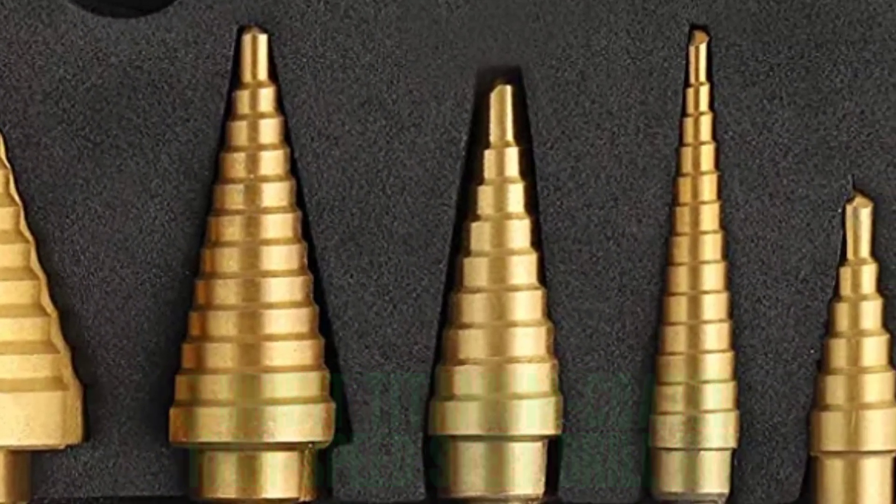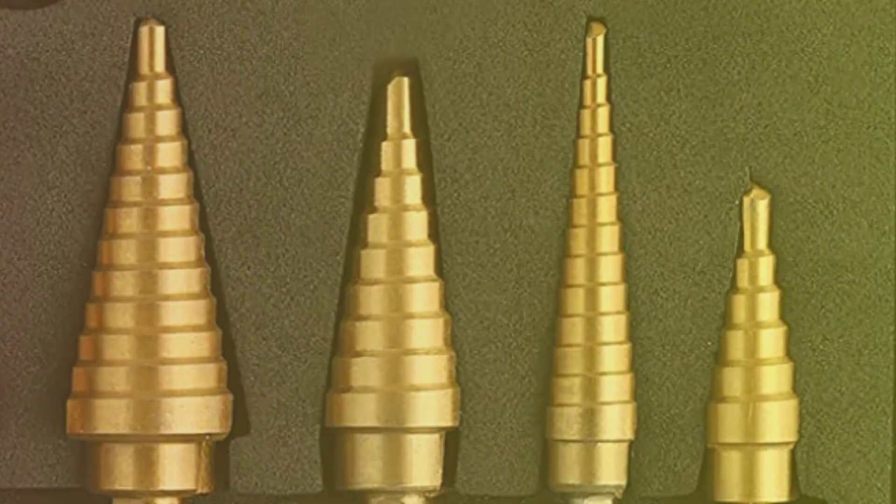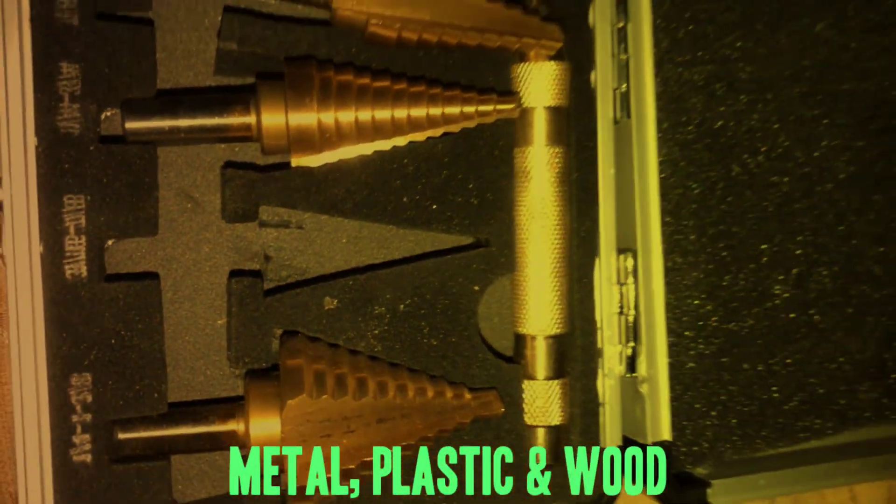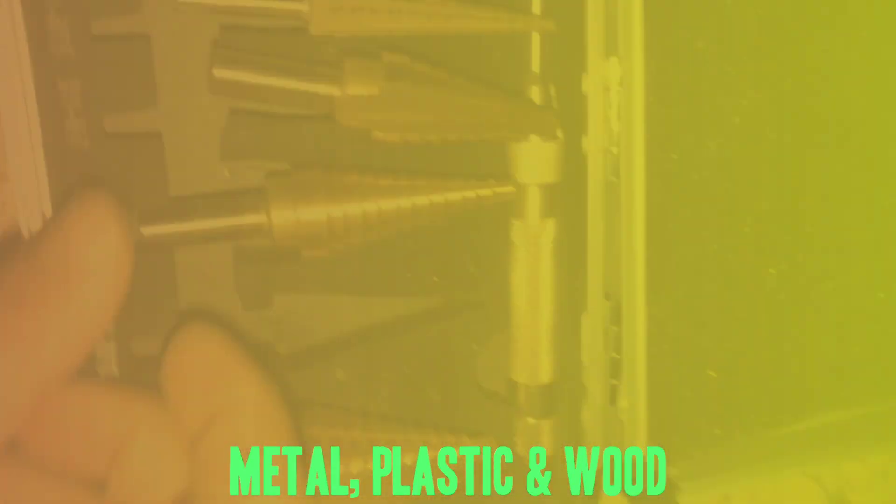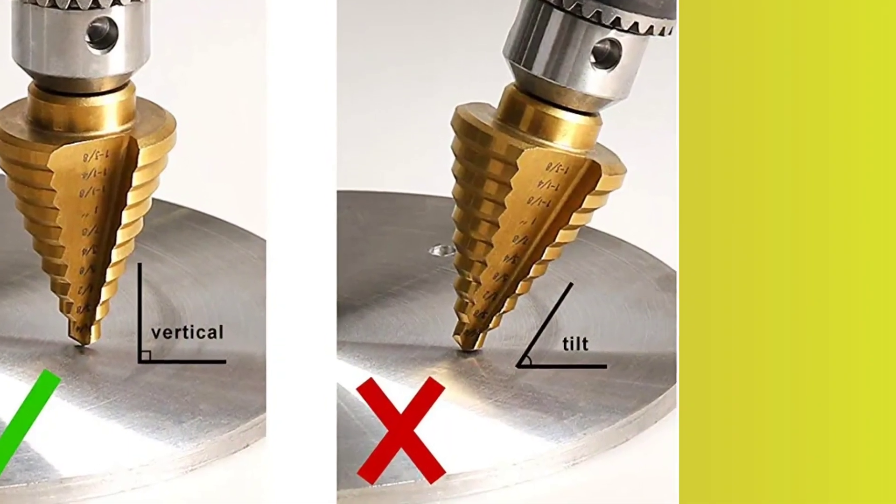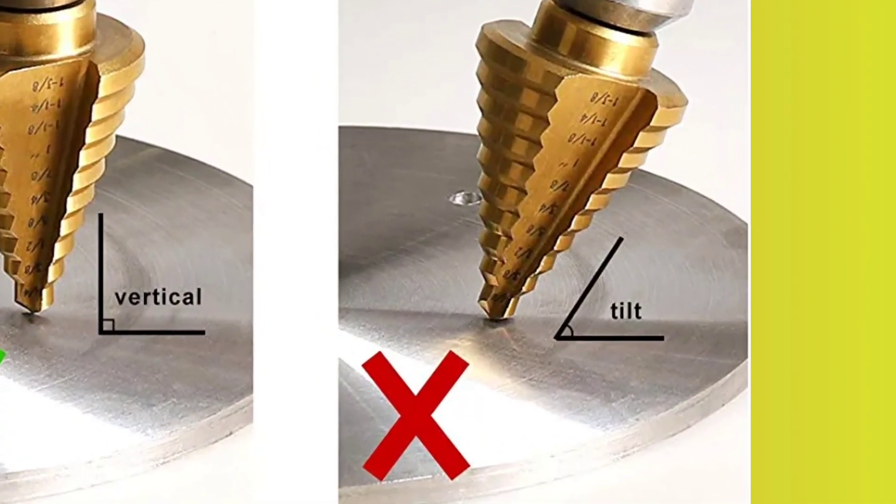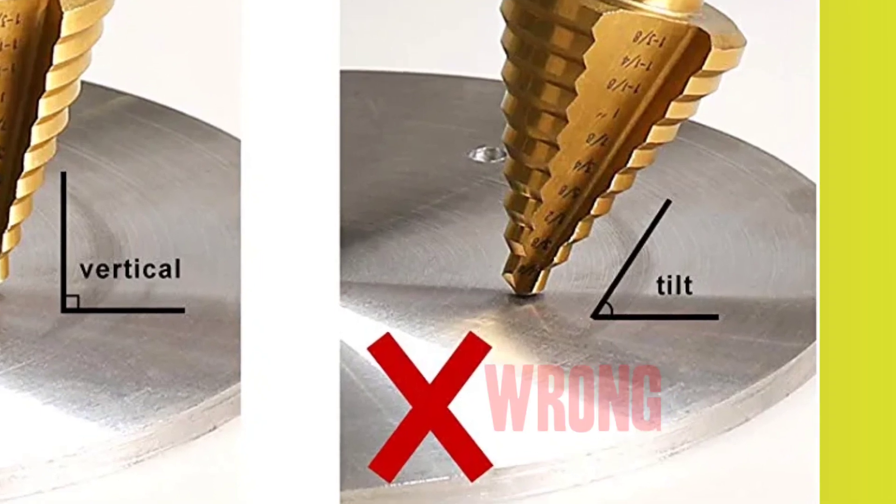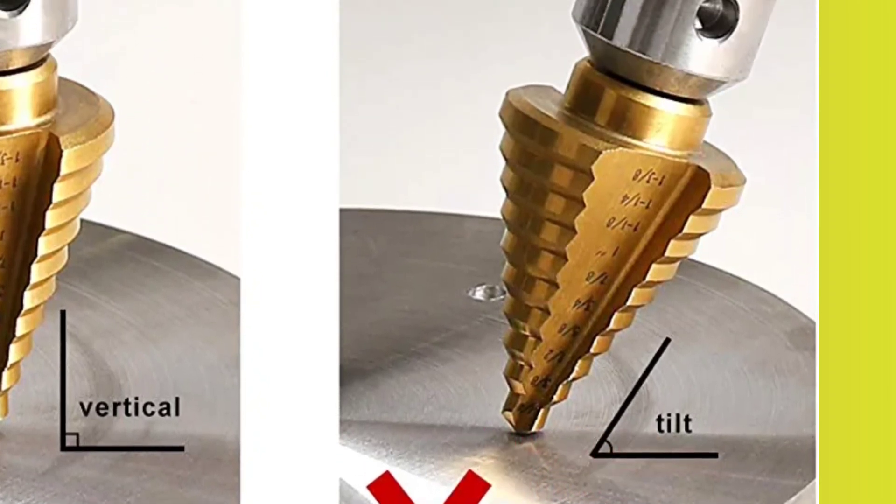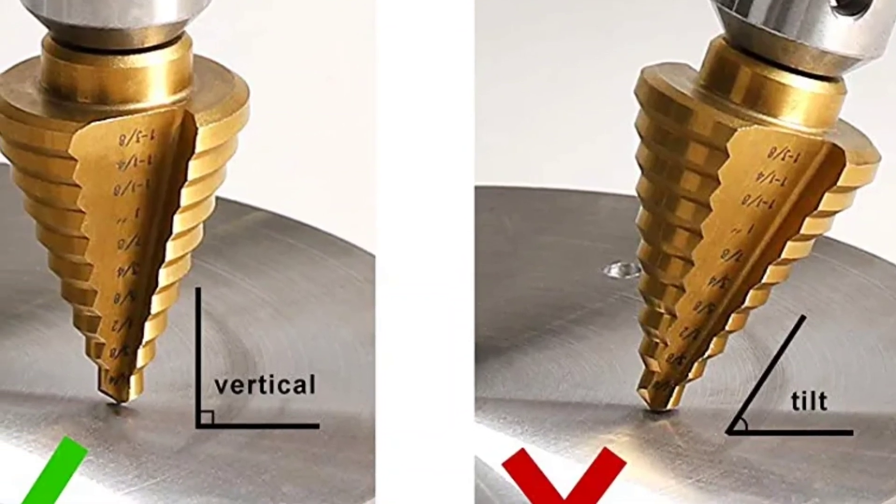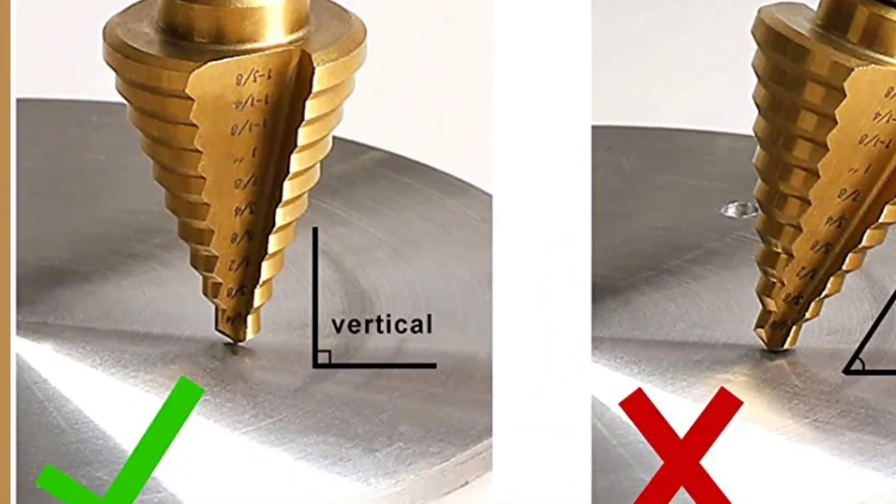This makes them ideal for drilling through a variety of materials including metal, plastic, and wood. One of the standout features of this set is the automatic center punch, which helps to ensure accurate starts for drilling. This is particularly useful for tasks where precision is important, such as creating holes for electrical outlets or plumbing fixtures.